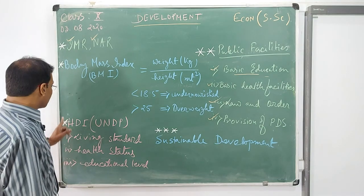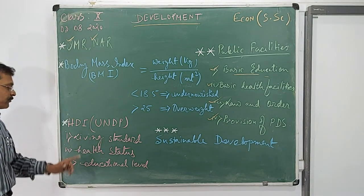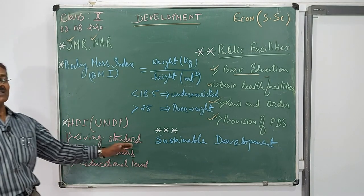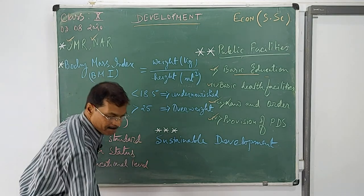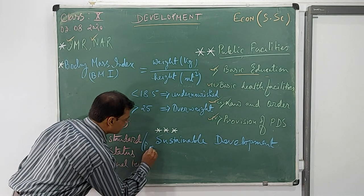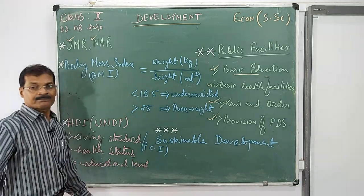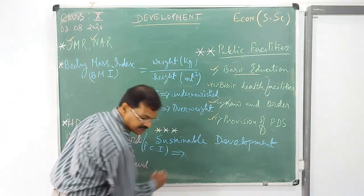UNDP is publishing this HDI. This report is called HDR, human development report. This HDI comprises of three things. Living standards, that means the per capita income.